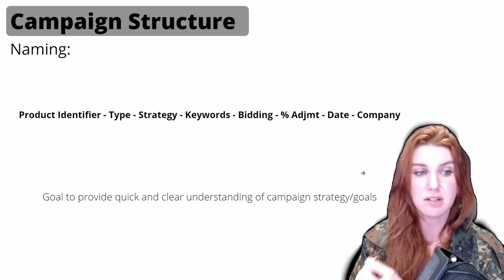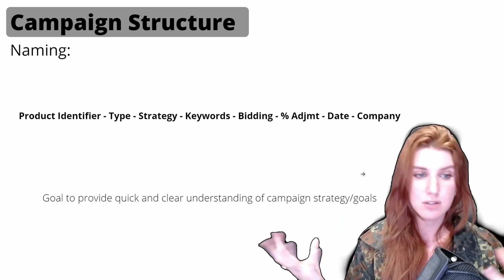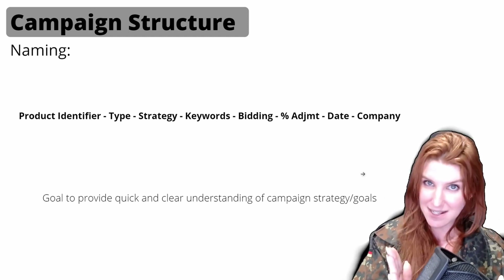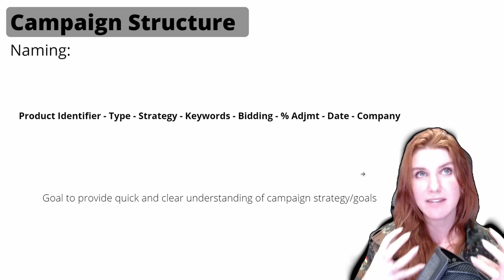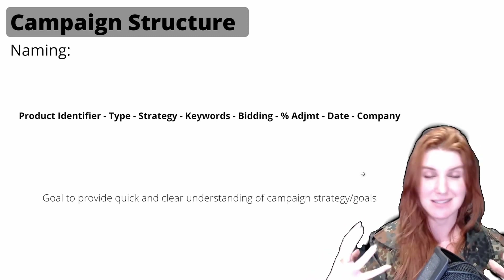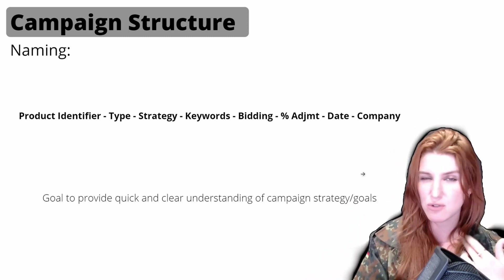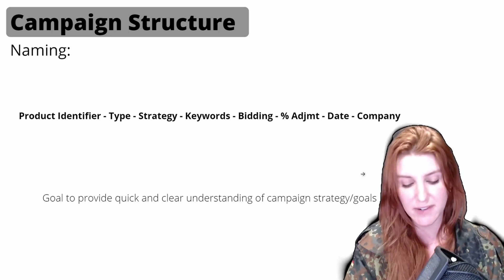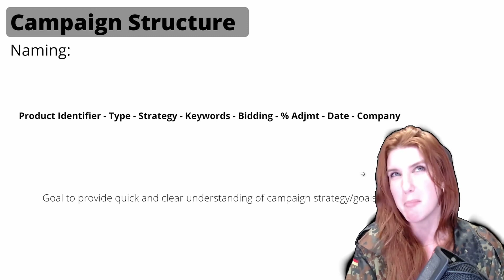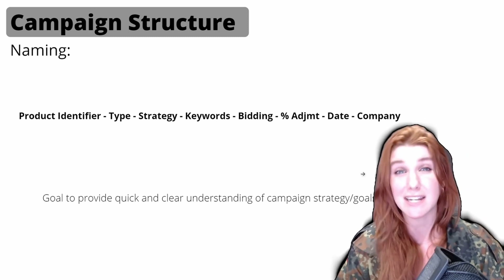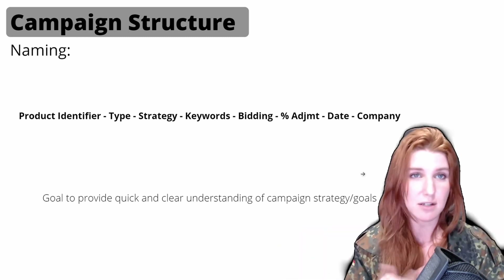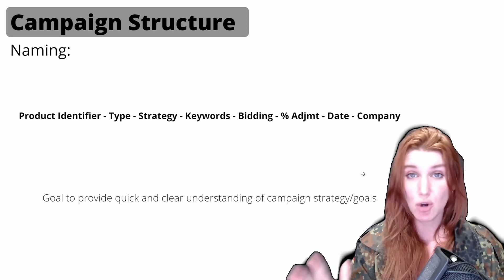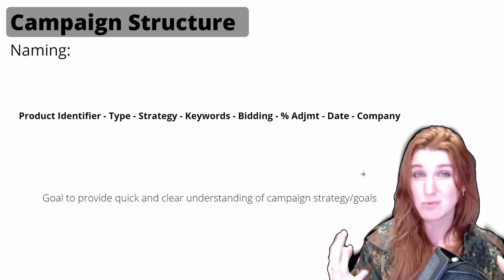The first part of the naming structure is a product identifier. This is a very quick, concise way to identify which product is contained within that campaign. Some people use a SKU, some people use an ASIN — that can be very valuable. We often modify the product identifier depending on how each client structures their account. One thing we ask during onboarding is, 'Do you have a naming system you already use for your products?'